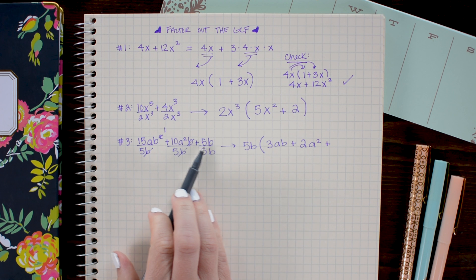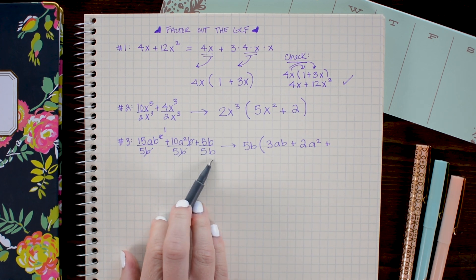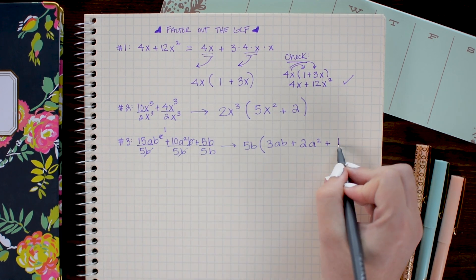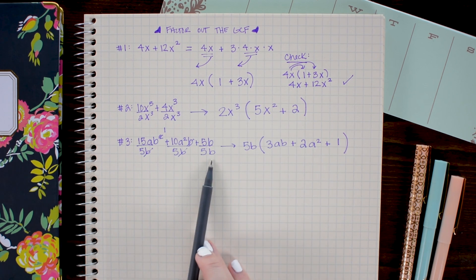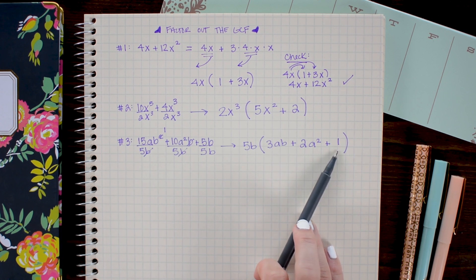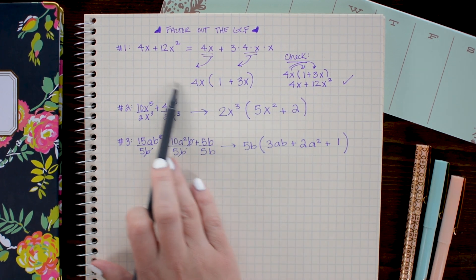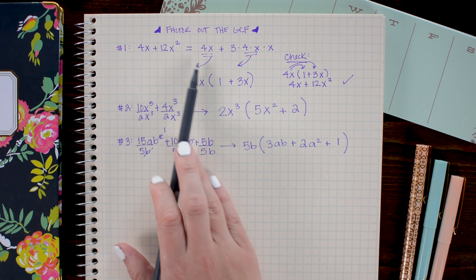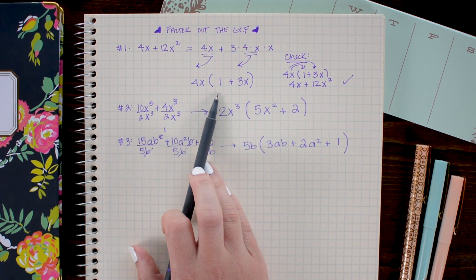And in this final term we get 5b divided by 5b which equals 1. Notice here that the nice thing about using the division method is that it ensures that you get a 1 placeholder left behind, whereas when we just pulled it out in this first problem we could easily miss writing it in our answer.